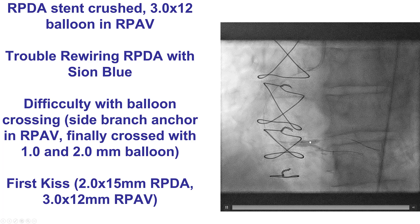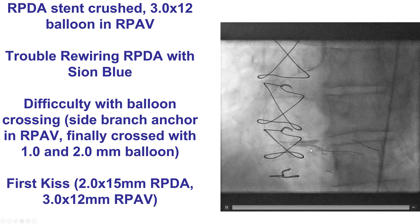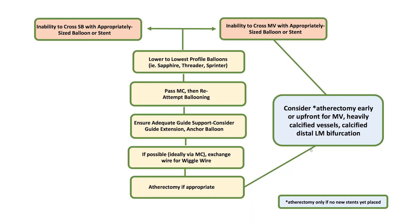After doing that, we performed crushing, followed by rewiring of the side branch through a proximal strut, and then did the first kissing balloon inflation. However, we had difficulty advancing the balloon into the posterior lateral, having to use a 1.0 mm Sapphire Pro balloon. We then upsized to a 2.0 mm balloon in the PDA and a 3.0 mm balloon in the posterior lateral. Expansion did not seem optimal, so we did more balloon inflations. This is the algorithm for what to do if we have difficulty crossing into the side branch with balloons or stents.